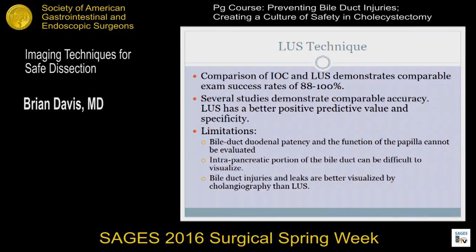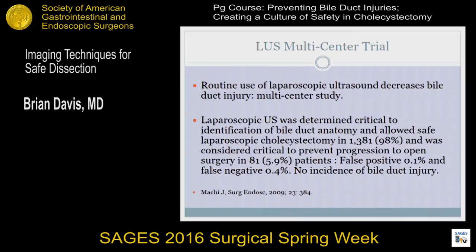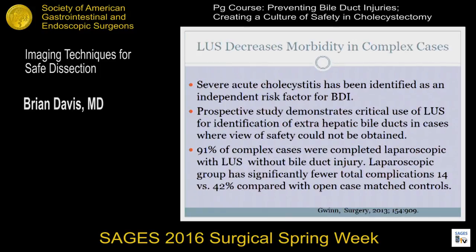Comparison demonstrates comparable exam success rate, with laparoscopic ultrasound having better positive predictive value and specificity. Limitations include difficulty in evaluating the ampulla of Vater and difficulty evaluating the intrapancreatic ductal portions. The ampullary complex and visualization of bile duct injuries are better visualized by cholangiography. Benefits include short completion times, avoidance of irradiation, ease of repetition during serial stages of dissection, and after the initial capital investment, a lower cost. The limitations are surgeon unfamiliarity with a learning curve of 20 or more cases and the need for a special probe. Multi-center trials demonstrated that ultrasound was critical in determining the safety of complex dissections, with a very low false positive and false negative rate and no incidence of bile duct injury.